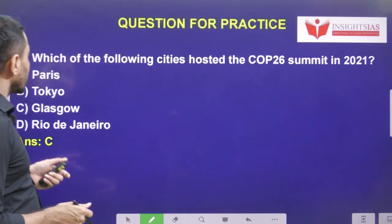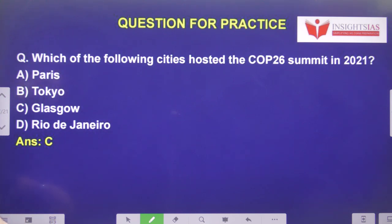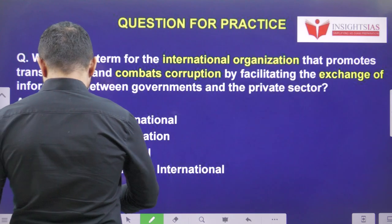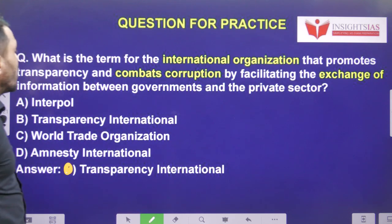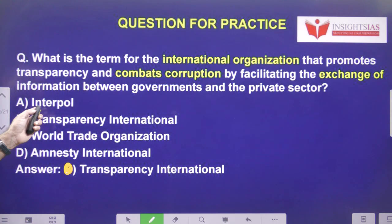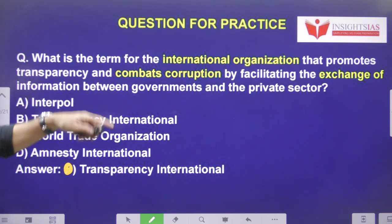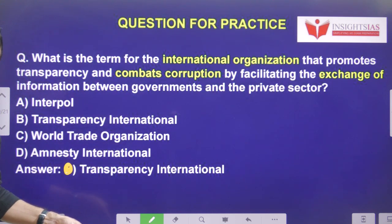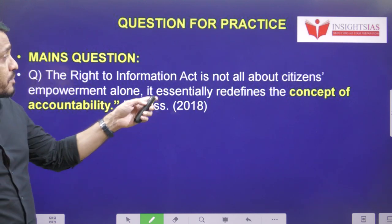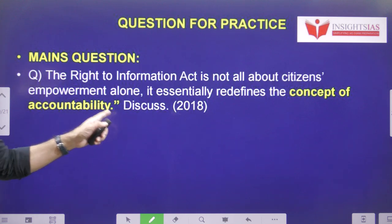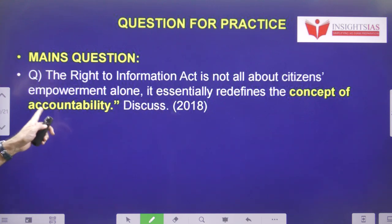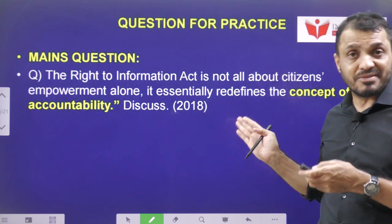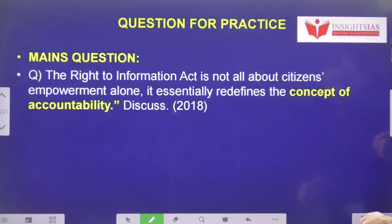Regarding yesterday's video question: the city that hosted COP26 in 2021 was Glasgow; COP27 was held in Sharm el-Sheikh, Egypt. Today's question: what is the term for the international organization that promotes transparency and combats corruption by facilitating the exchange of information between governments and the private sector? Also, the main question is: the Right to Information Act is not just about citizen empowerment alone — it essentially redefines the concept of accountability. How can you support this statement?